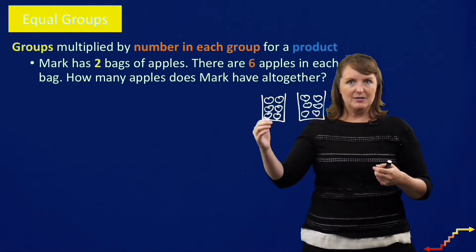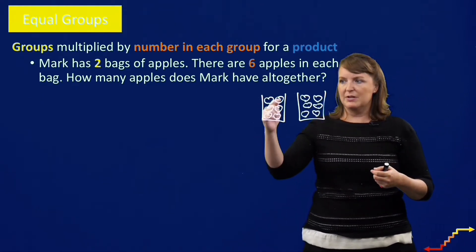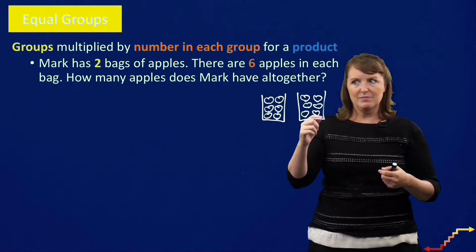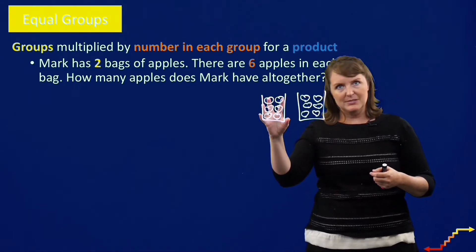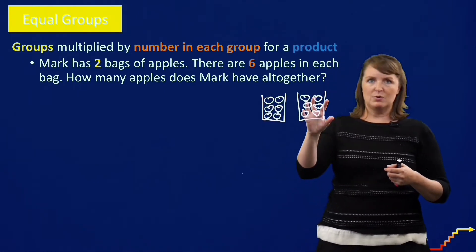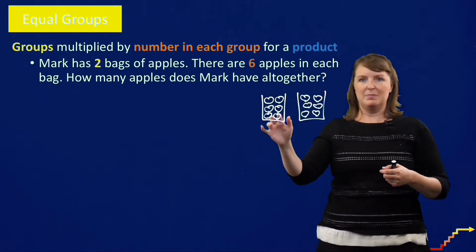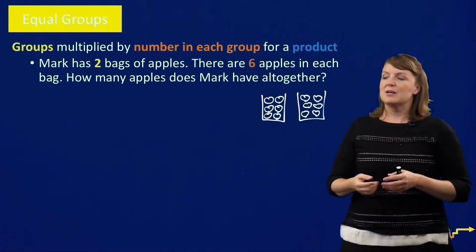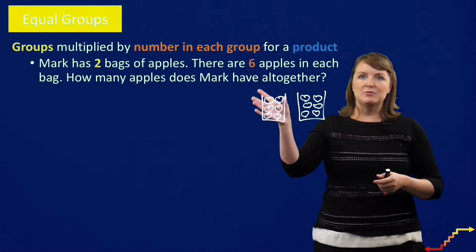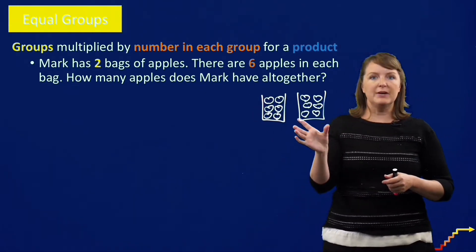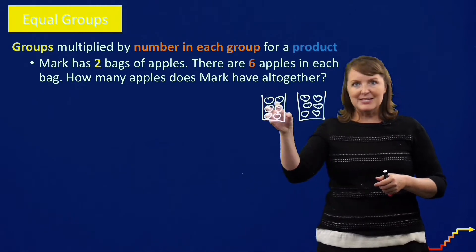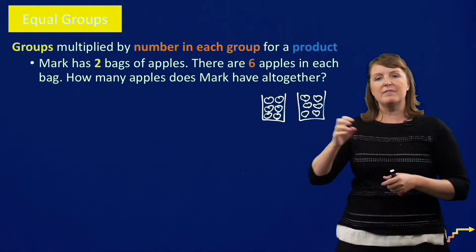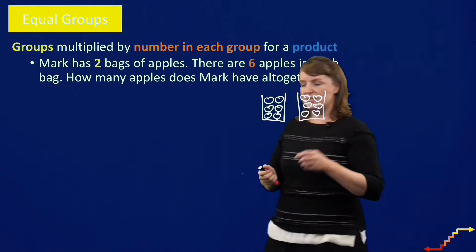I could count individually: 1, 2, 3, 4, 5, 6, 7, 8, 9, 10, 11, 12. I could also skip count — 6, 12 — or count them in pairs of two. Lots of different ways to figure out the product. You can see I have two different groups, and there's the same, equal number of apples in each of those groups.